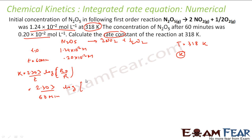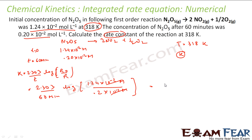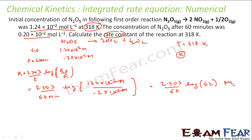Log of r₀ — initial concentration is r₀ — divided by final concentration r. This simplifies and this gets cancelled, giving log of 6.2. So this is 2.303 / 60 × log(6.2), and the unit will be per minute. Solving this, you get 0.0304 per minute.